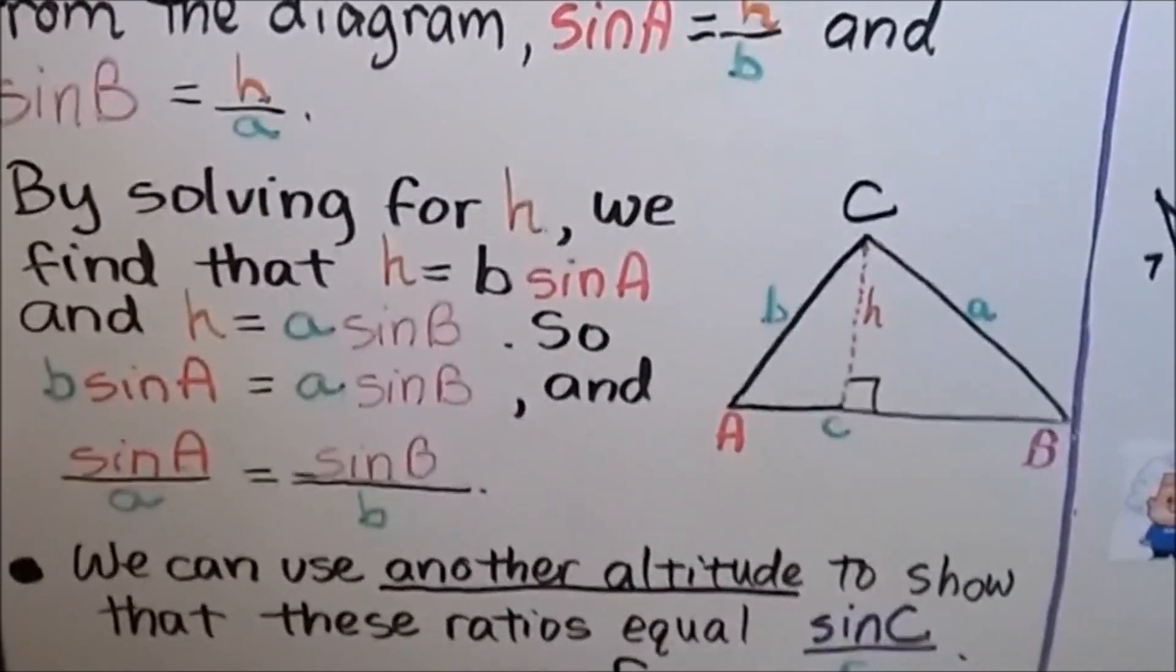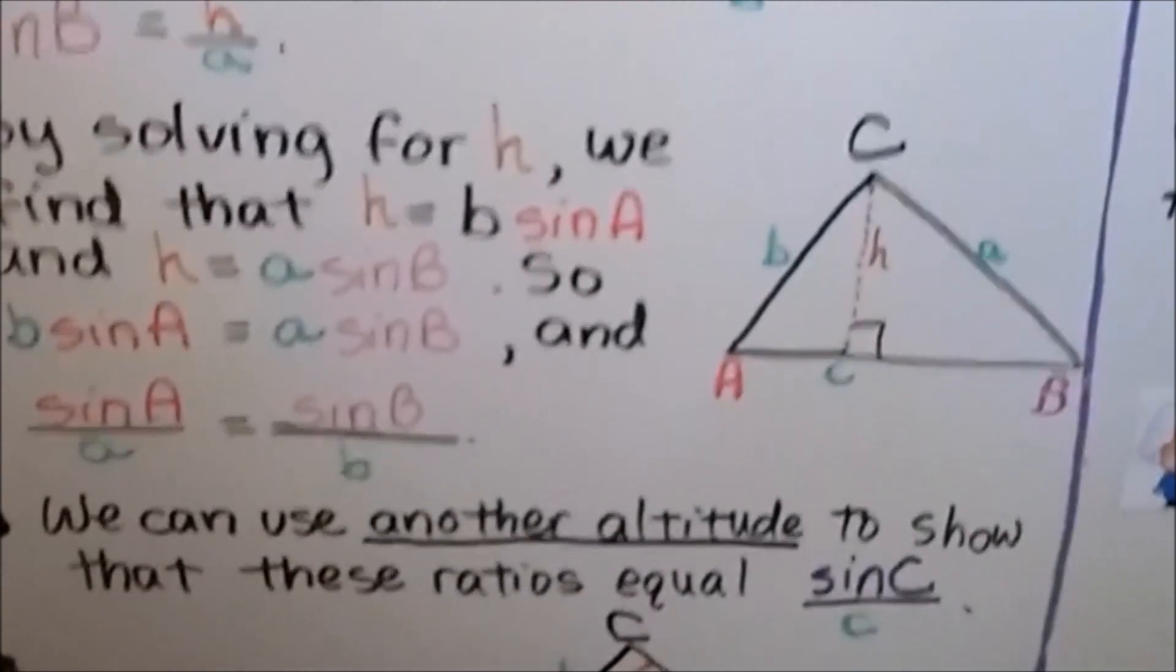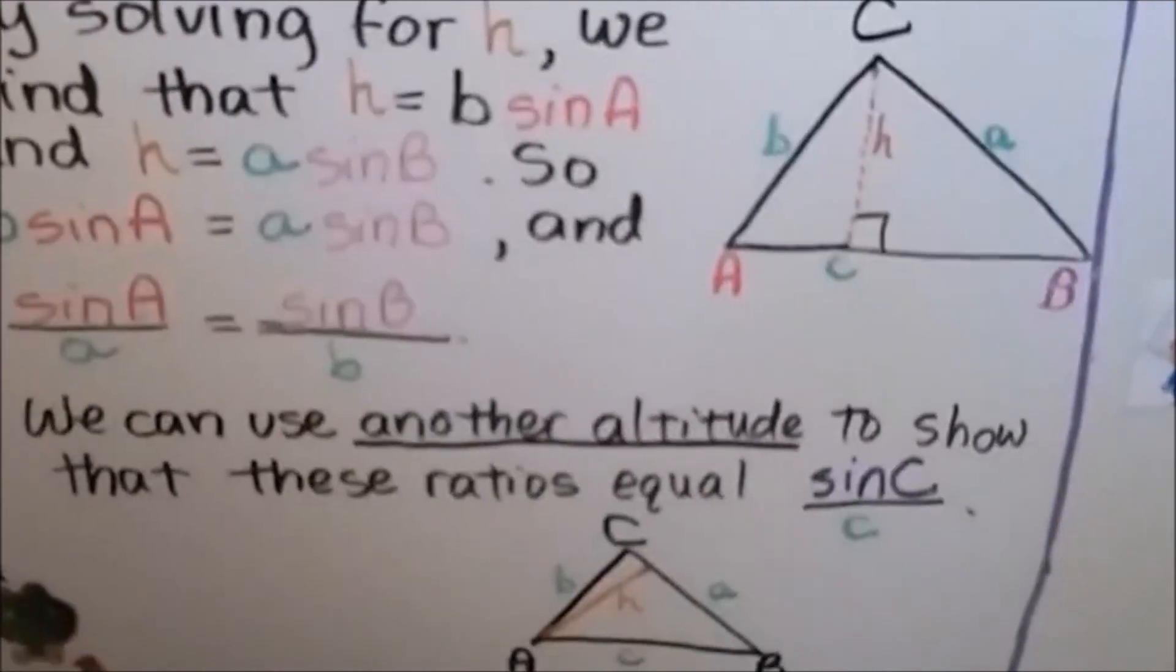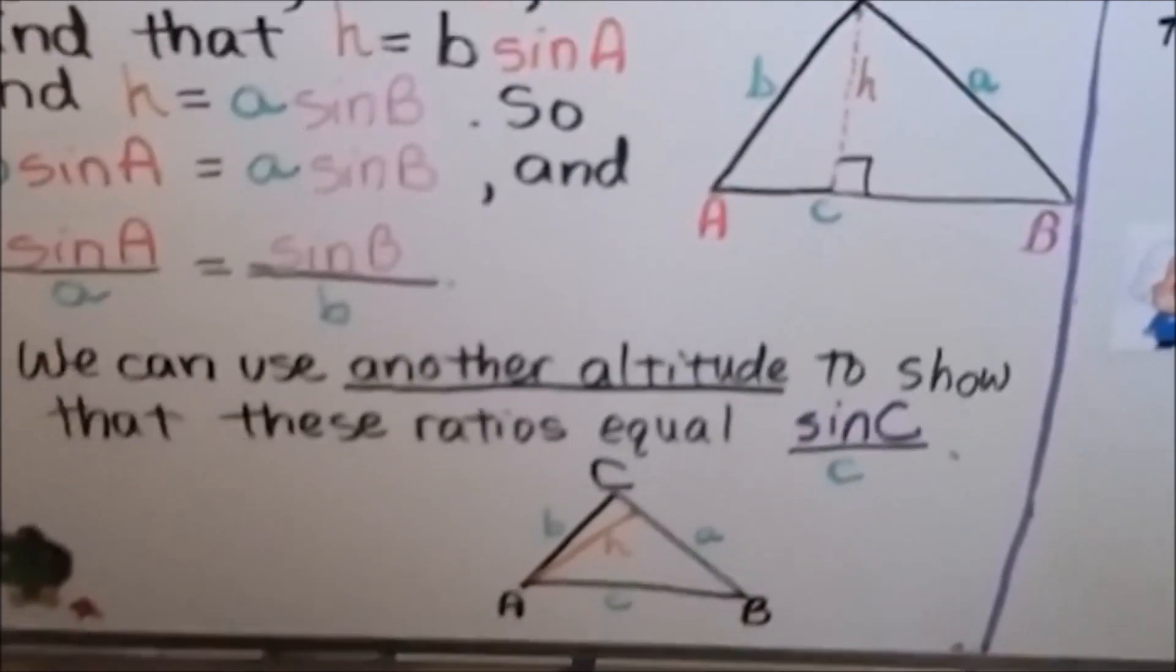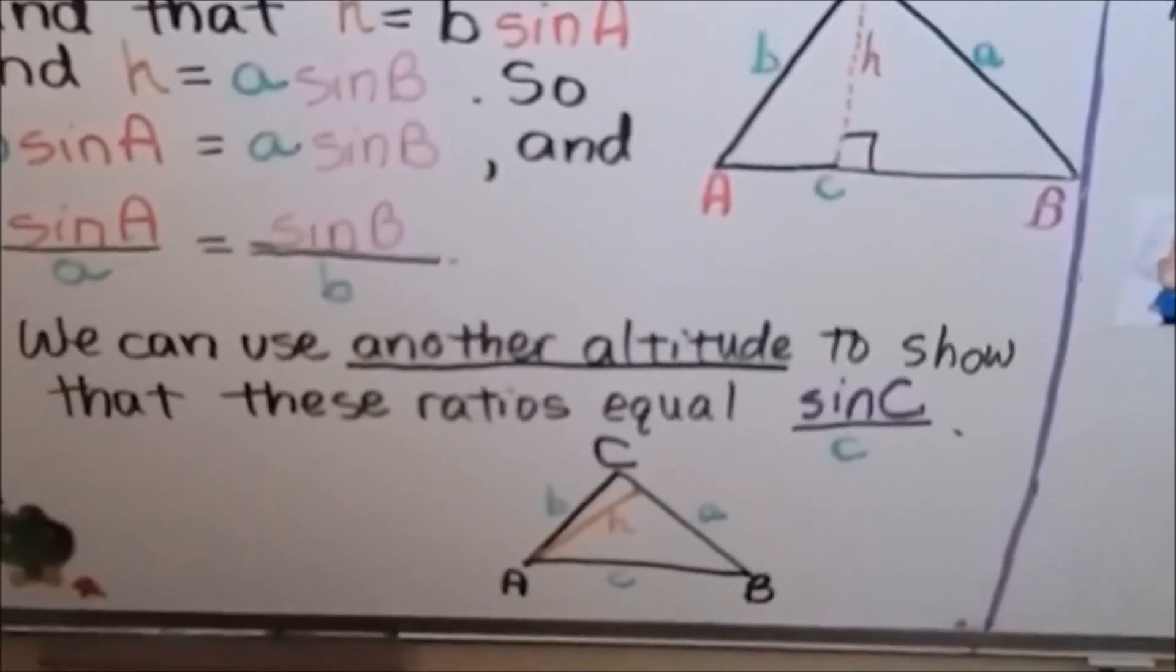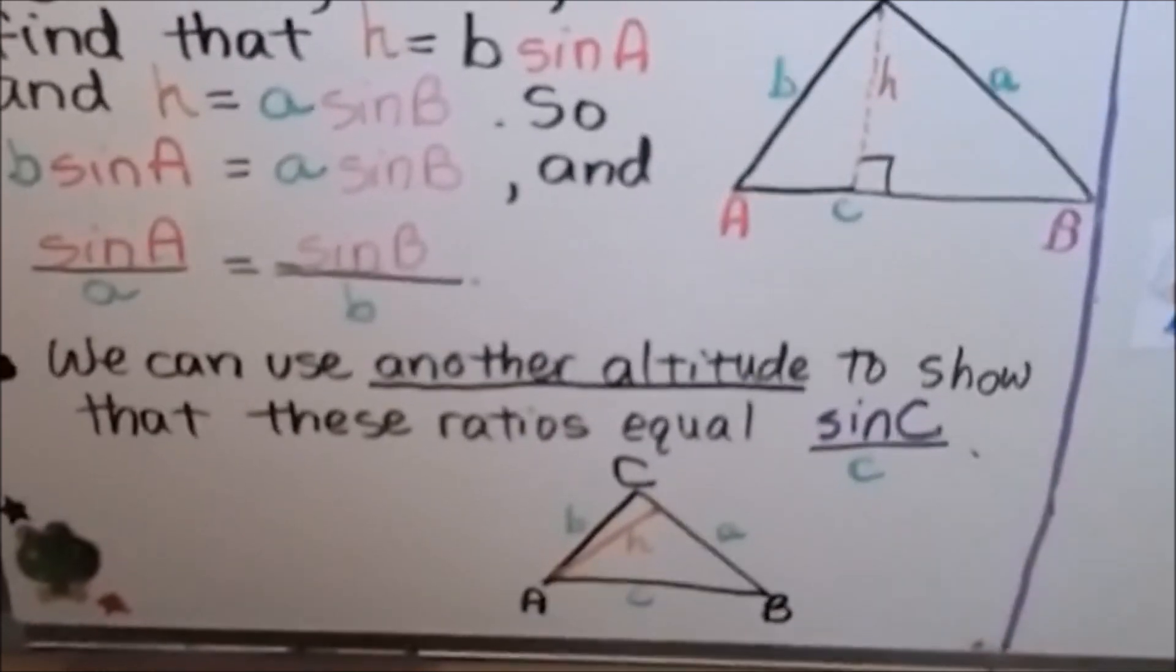I know that can sound confusing, but stick with me. Throughout this video, hopefully you'll understand. We can also use another altitude to show that these ratios equal sine of C over C. We have a different altitude.